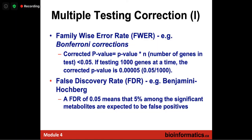The other popular method is the False Discovery Rate (FDR), specifically the Benjamini-Hochberg method. An FDR of 0.05 means that 5% of significant metabolites are expected to be false positives. FDR is more accommodating than Bonferroni. If you use Bonferroni and don't get any significant features, you should use FDR. FDR is more well-accepted and more generous — you can get features to work on. A lot of times if you don't get significant features you cannot continue, so FDR is preferred in omics.